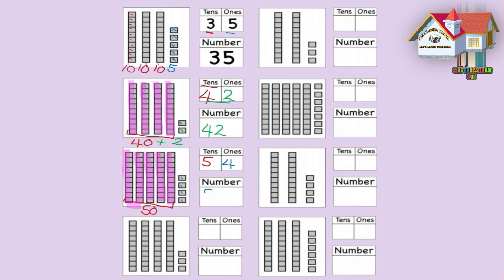We're going to write the number 54 here. We are going to carry on counting until we get to 54. 10, 20, 30, 40, 50. After 50, we convert our mind and count in ones: 50, 51, 52, 53, 54. Well done, and that's the answer we got.